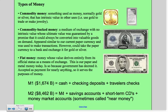M2 then consists of M1 — those three items — plus savings accounts, short-term certificates of deposit, and money market accounts. These three are sometimes called near money because they are illiquid relative to cash, checking deposits, and traveler's checks. M1 is about 1.6 trillion. M2 is 8.4 trillion — that's 8.4 thousand billion. That's the size of the current money supply. M3 used to be used, which included large time deposits and some institutional money market funds, but it's not used anymore, so don't worry about it.